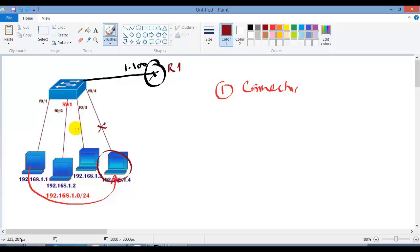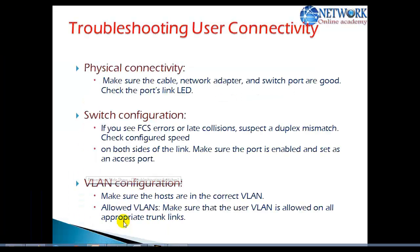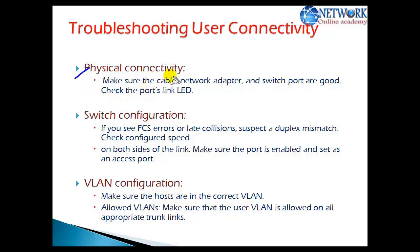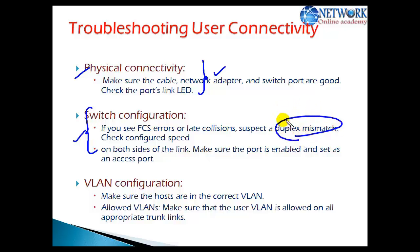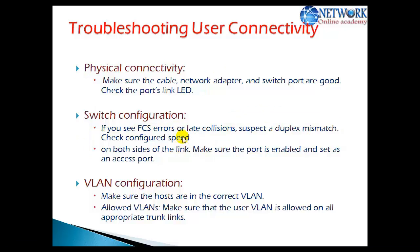Let's say the problem is on the local device — only this user is facing the problem, so there is a connectivity issue between the 1.1 PC and the switch. There are a few important things we need to check. The first thing is physical connectivity. There are many reasons for not having a proper connection, which I'll detail in the next slide. It can also be switch misconfigurations like duplex mismatch, which can cause collisions and late collisions, or FCS errors affecting communication between devices.